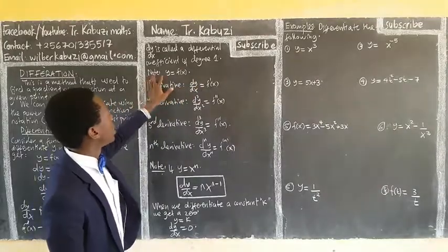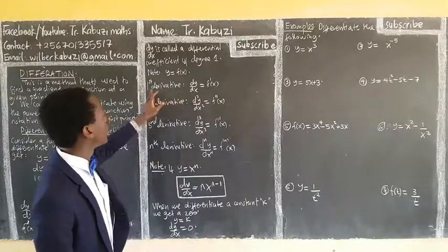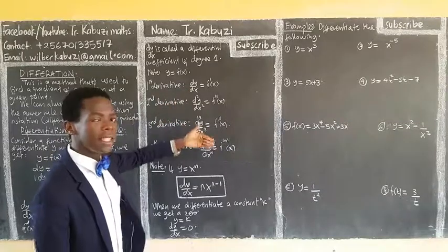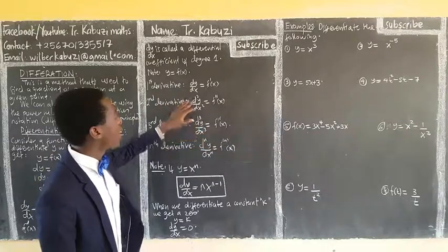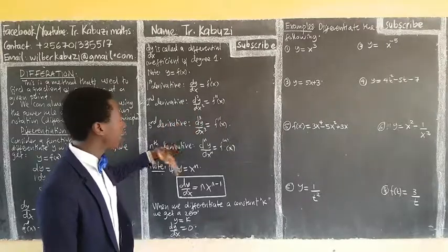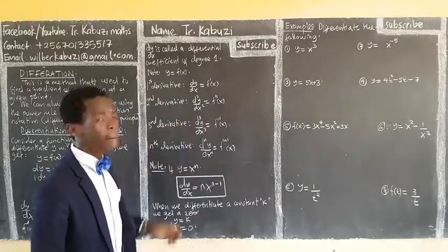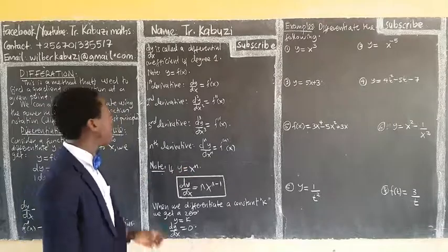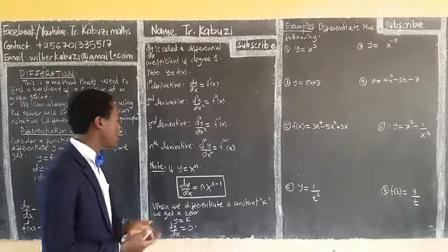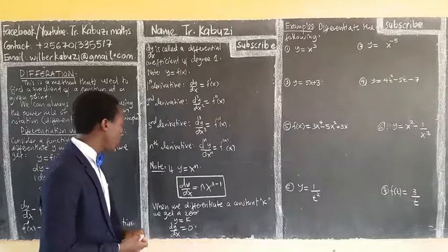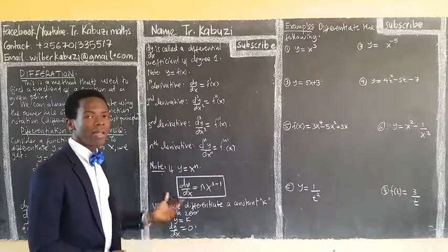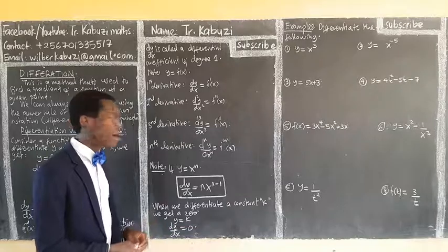Note: y is equal to this. When you differentiate this, this is what we call the first derivative. If you differentiate a second time, we call it the second derivative. If you go further, the third derivative. You can differentiate n times any term of that function or that equation. So if y is equal to this, now this is what we call the power rule. How do we use the power rule?